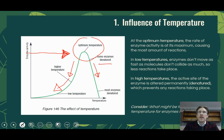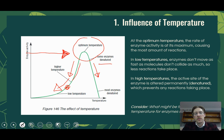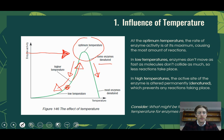Think of it this way: if I have 30 people in a room walking randomly with their eyes shut, every time two people collide, we call that a successful reaction. If people are walking slowly, there'll be few collisions. If I tell them to start running, we see more collisions occurring. So when we lower the temperature outside the enzyme's desired conditions, the rate of reaction is lowered. However, once we go past the optimum temperature, the shape of the enzyme's active site is changed permanently, and the substrates can no longer bind.